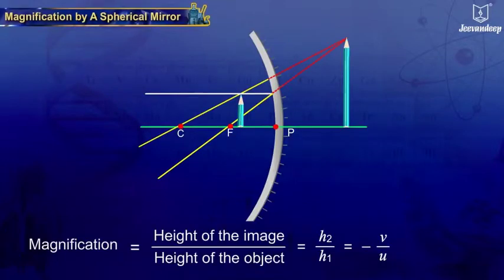Magnification produced by a spherical mirror is expressed as the ratio of the height of the image, H2, to the height of the object.